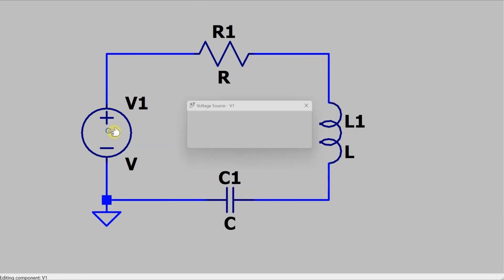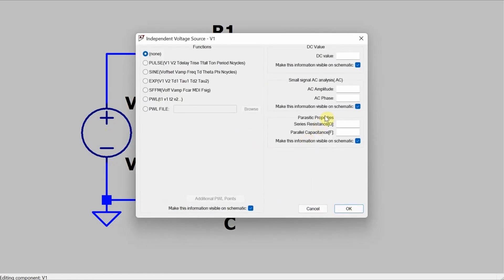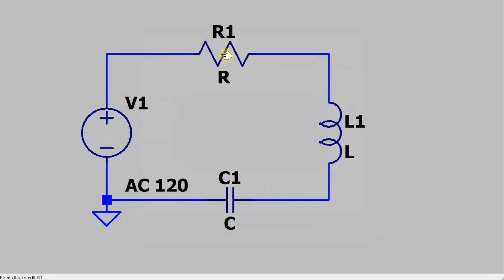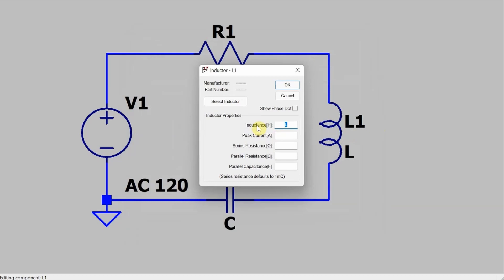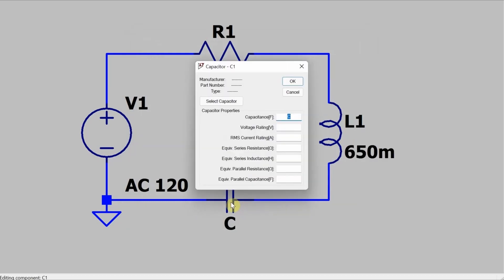Now assign values. For the voltage source I need to go into advanced and I need to set the AC amplitude to 120. The resistor is 250 ohms, the inductor is 650 millihenries, and the capacitor is 1.5 microfarads.